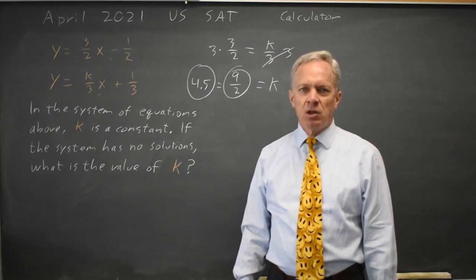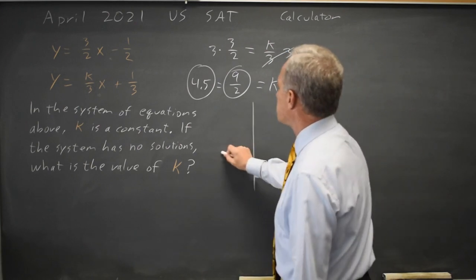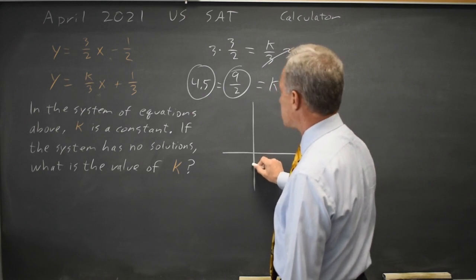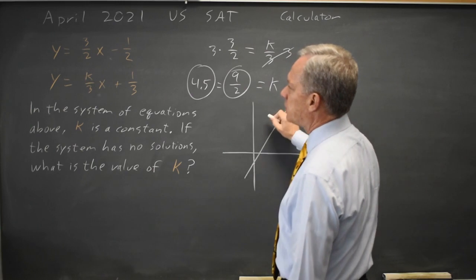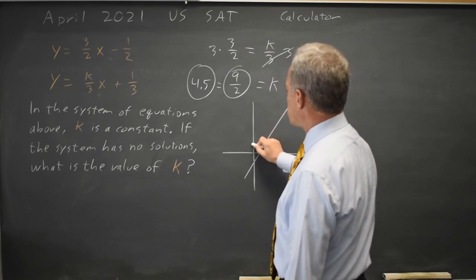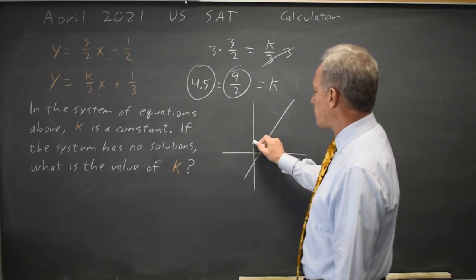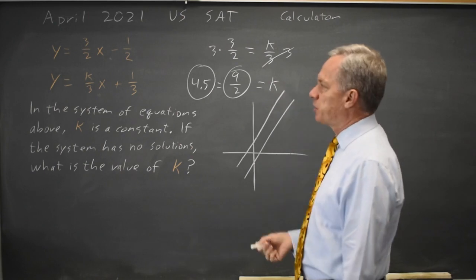Make sure this makes sense to you. If we look at a system that has no solution, we have slope of 3 halves and intercept of negative 1 half, and another one with a slope of k over 3 and an intercept of positive 1 third.